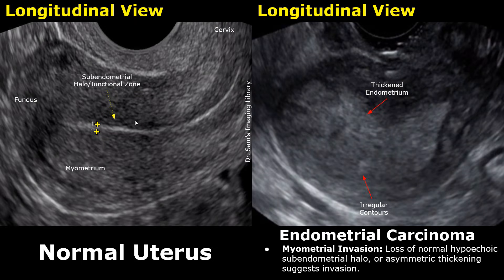The subendometrial halo is this thin hypoechoic layer surrounding the endometrium, representing the innermost part of the myometrium known as the junctional zone. Loss of this normal hypoechoic subendometrial halo indicates myometrial invasion. Here, we do not see the hypoechoic halo as it has been disrupted by the mass, which has irregular contours and a heterogeneous appearance.